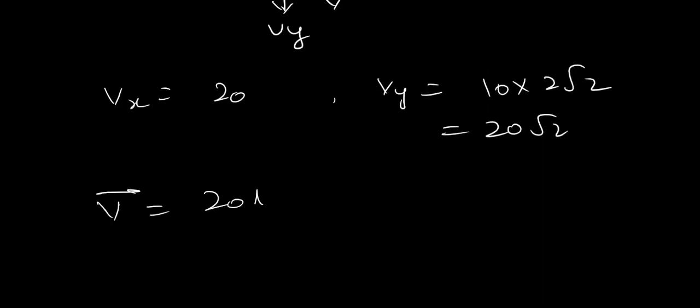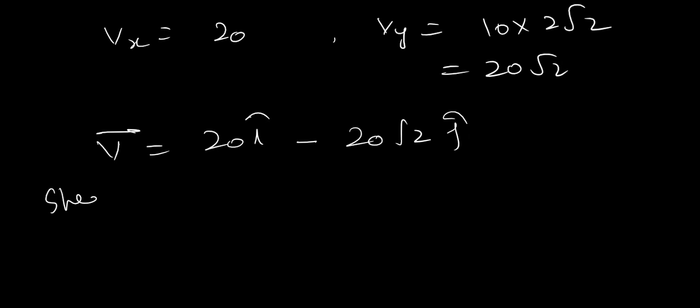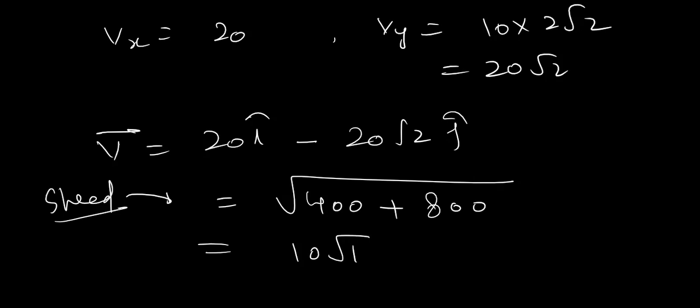Toh, yeh velocity ho ga, 20 i cap, minus 20 root 2 j cap. Toh, yeh, agar mumsahe puchha, jab ground pe pahunche ga, Toh, speed kitnay ho ga, Toh, phir answer ho jata hai, 20 ka square 400, plus 20 root 2 ka square 800. Toh, yeh, aa jata hai, 10 root 12, or, 20 root 3 meter per second. Toh, itni speed se, yeh body, earth ko hit kar ta hai. Thik hai?